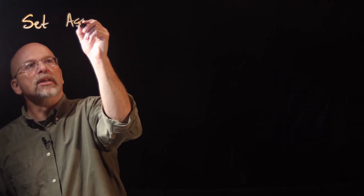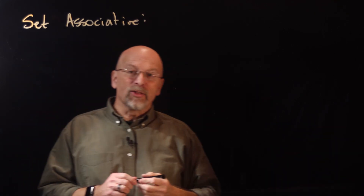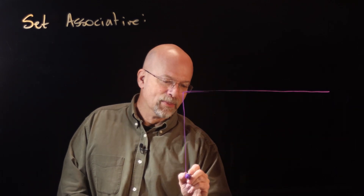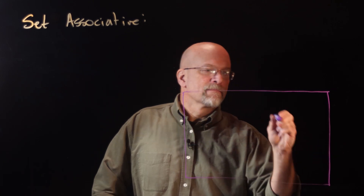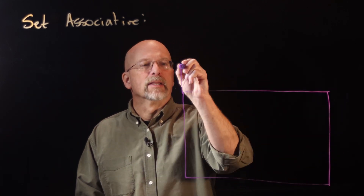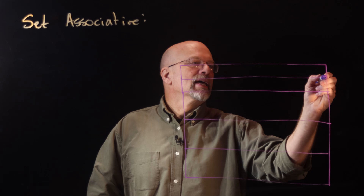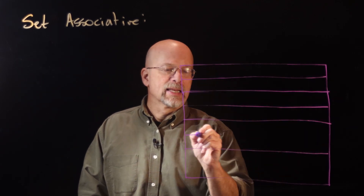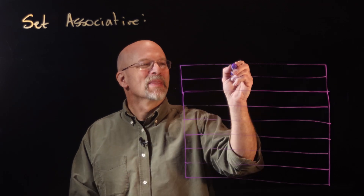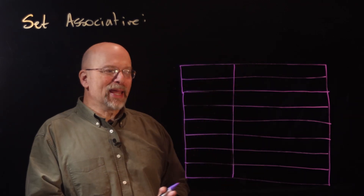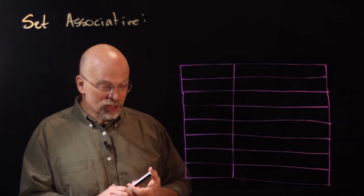That's what we're going to talk about right now — set associative mapping. Let me describe it by showing you with an example, like we've done before. For the direct mapping example, I used eight lines. We took the full address and had a couple of bits that were the word ID bits, a couple of bits used as the line ID bits, and then the rest was the tag.